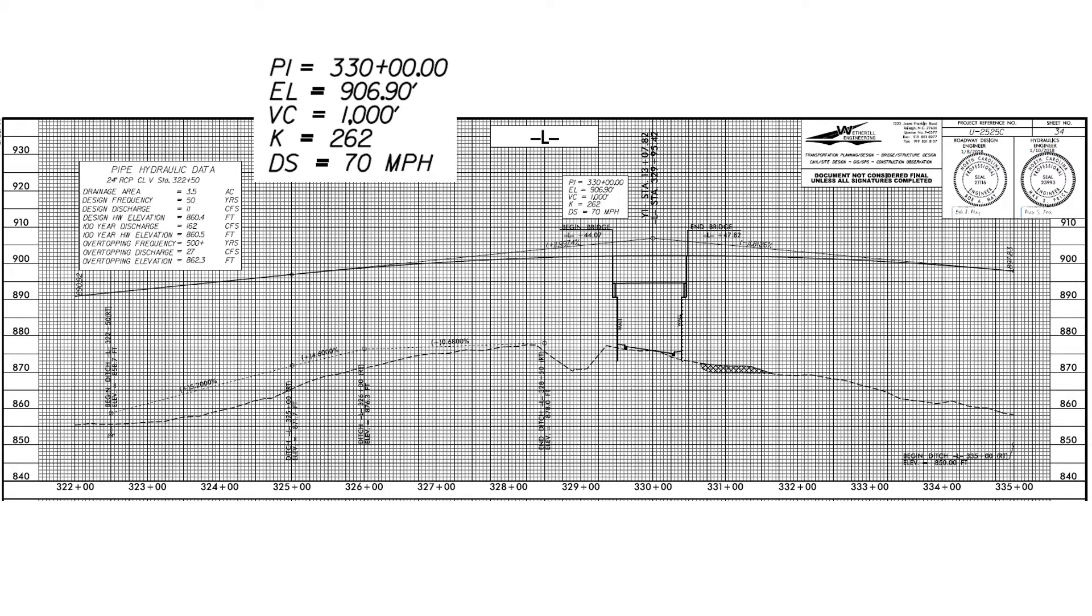So here's our vertical curve. It has a PI at station 330. The elevation of the PI is 906.9 feet. The length of the vertical curve is 1000 feet. It has a K or rate of vertical curvature of 262 and the design speed is 70 miles per hour.